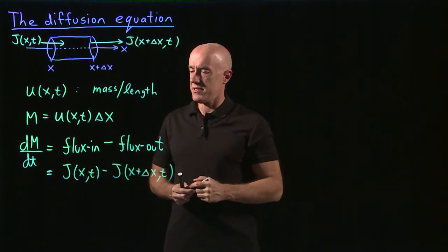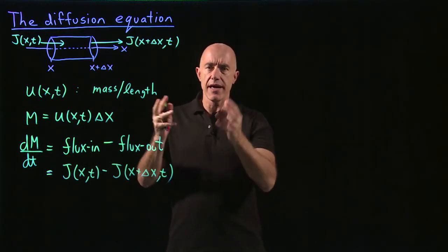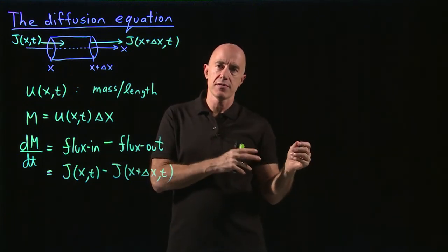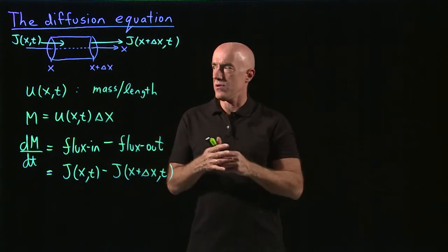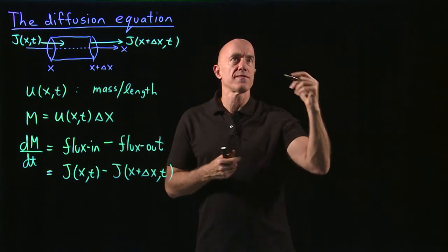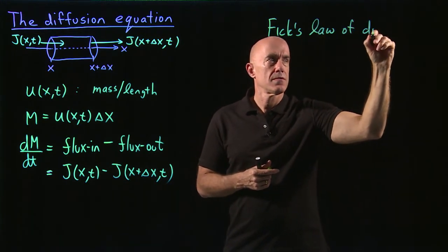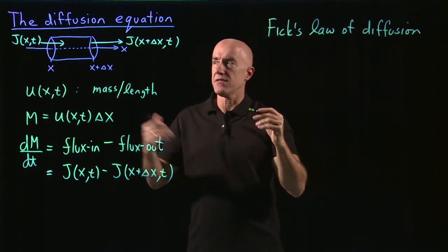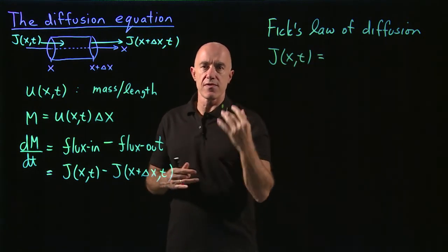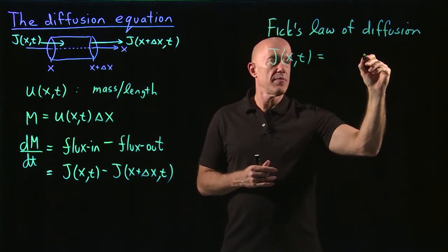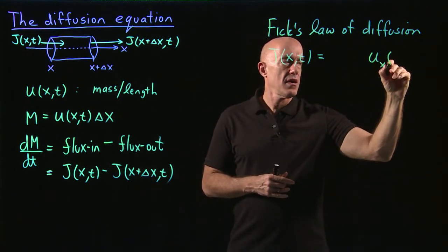What we need is a model for this flux. The idea of diffusion is that it occurs from high concentrations to lower concentrations — that's the gradient. This is called Fick's law of diffusion. It says the flux j(x,t) is proportional to the derivative of the concentration — that's the gradient in one dimension — the partial of u with respect to x, written as u sub x at (x,t).